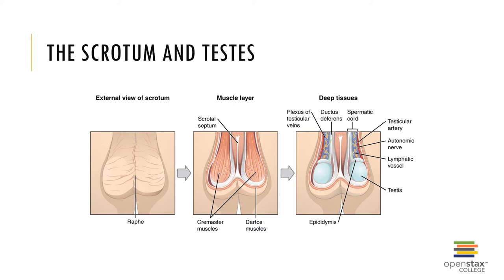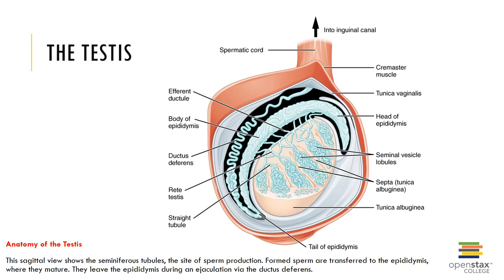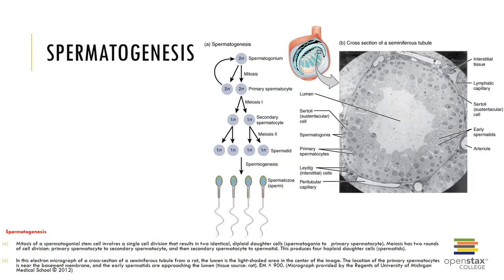Two muscles are associated with the scrotum's ability to change size and shape during temperature changes: the dartos muscle, which is a smooth muscle layer that wrinkles the scrotal sac trapping warm air, and the cremaster muscle, which is a skeletal muscle layer that pulls the testicles close to the body, thus regulating body temperature.